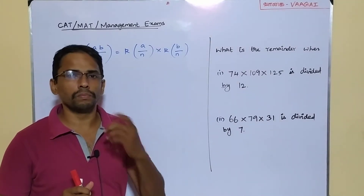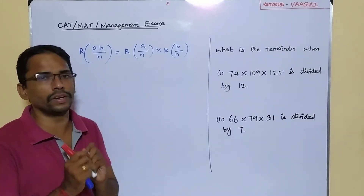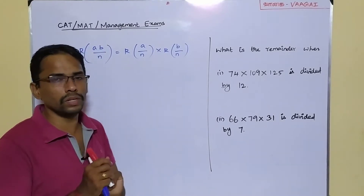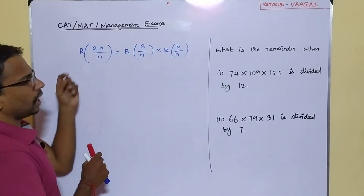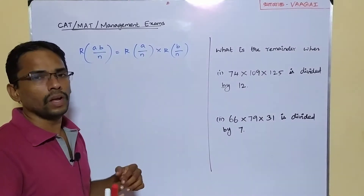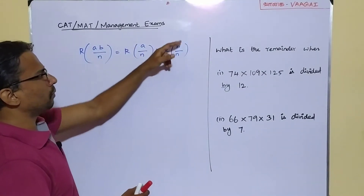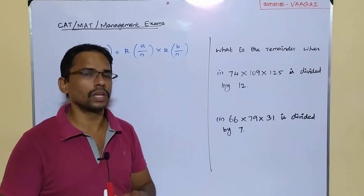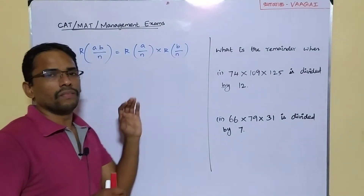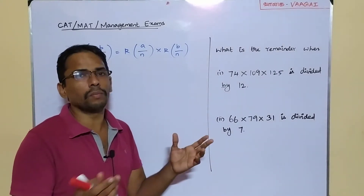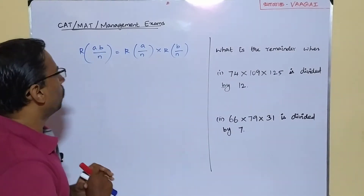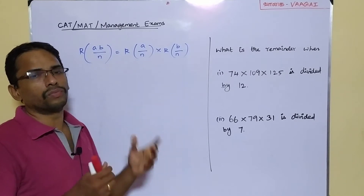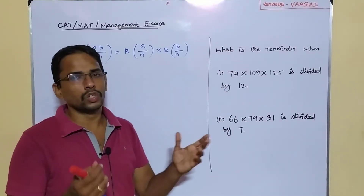For clarity, whenever we need to find the remainder of a product A×B divided by some number n, what we can do is take the individual remainders and then multiply them. This is what the property states. It's not only for two numbers — we can extend it for three, four, or any number of numbers. In words: the remainder of a product will be the same as the product of the remainders.